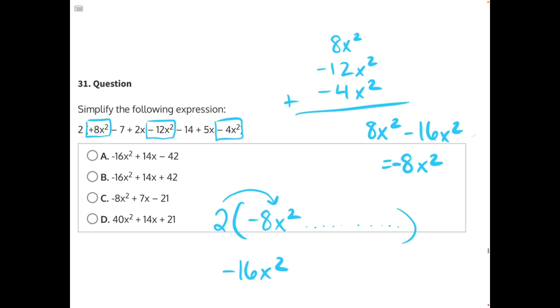So that means that C is incorrect because it doesn't have negative 16x squared, and D is incorrect because it doesn't have negative 16x squared. And looking between answer choices A and B, the only discernible difference is the sign of the last number in the polynomial. So for the sake of time, let's skip simplifying these two terms and go straight to simplifying the negative 7 and negative 14.